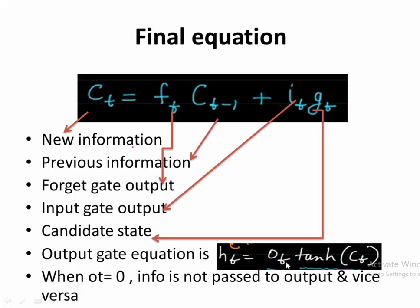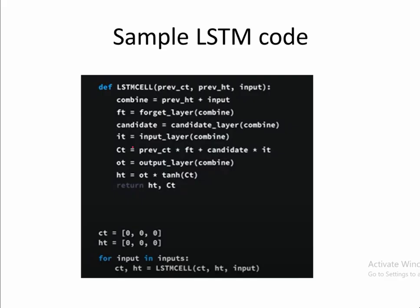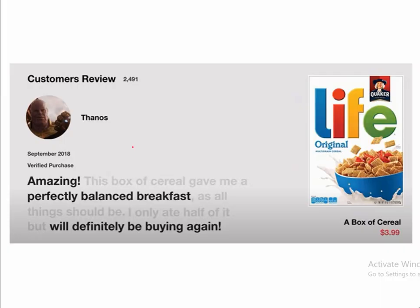When the output gate value is zero, information is not passed to the output, and vice versa. There is a sample LSTM code which is self-explanatory. In TensorFlow Keras, if you directly use an LSTM layer, the entire combinations of interconnections are made automatically. In the example, faded text represents forgotten information and bold text is what is retained, allowing the model to understand this is a positive review and you can buy the product.